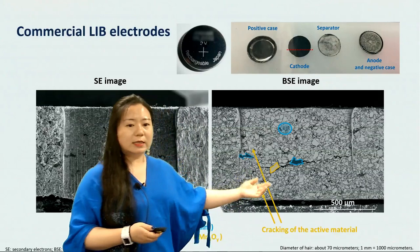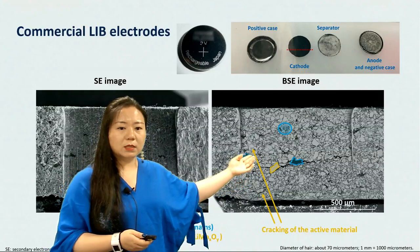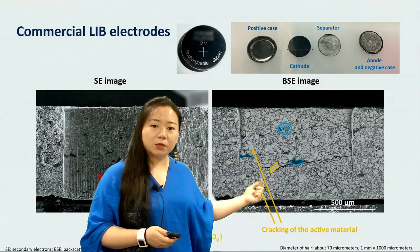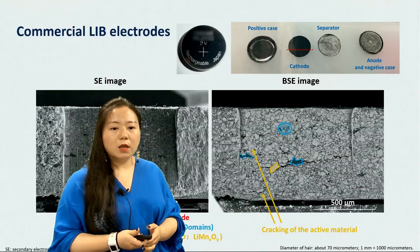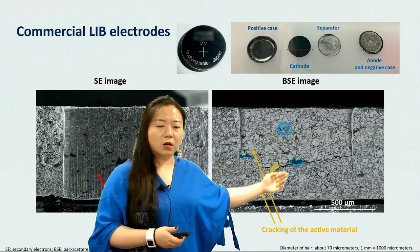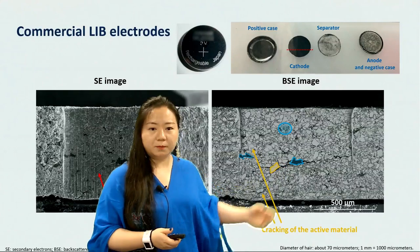From the secondary and backscattered electron images, we can see a tremendous amount of small pieces of active material with irregular shapes sitting between the big particles — probably fractured pieces. We can also see that the CBD domain is not homogeneous across the whole electrode, with very obvious agglomerations marked in blue.